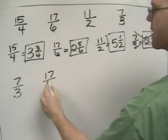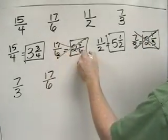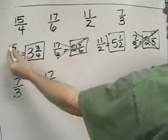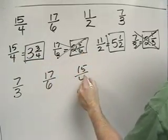17 sixths is next, and then it's very easy to see that 15 fourths is next, and the largest is 11 halves.